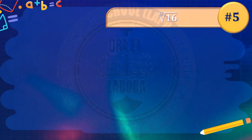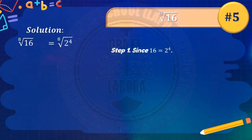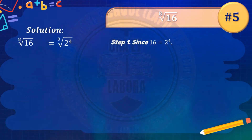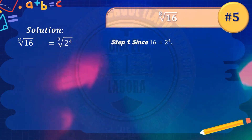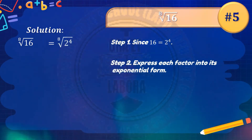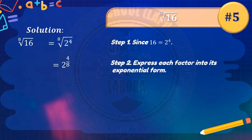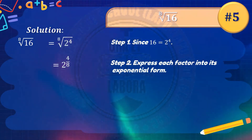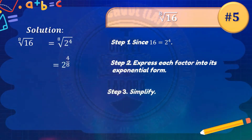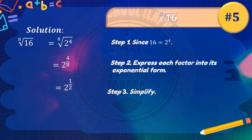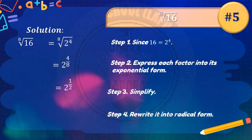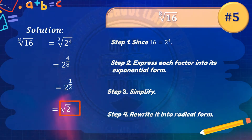Number 5: the 8th root of 16. Since 16 equals 2 raised to 4, express this in exponential form as 2 raised to 4 over 8. Simplify: 4 over 8 reduces to 1 half, giving 2 raised to 1 half. Rewrite into radical form: 2 raised to 1 half is the square root of 2. So the final answer is square root of 2.